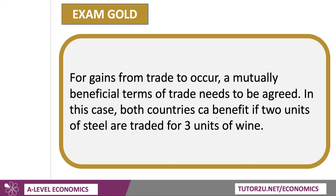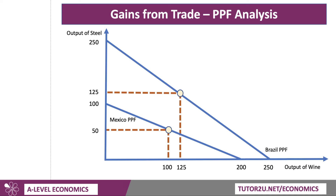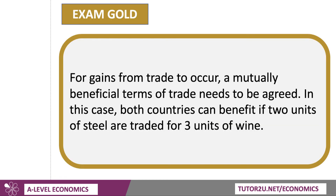For gains from trade to occur, mutually beneficial terms of trade need to be agreed. Both countries need to specialize first, and then trade. In this case, both countries can benefit if two units of steel are traded for three units of wine. Mexico currently gives up two units of wine for one unit of steel, whereas two-for-three means it gives up three units of wine and gets two units of steel — better for Mexico. Brazil gives up one unit of steel for one of wine, but now gives up two units of steel for three units of wine — again, better off. That's what we mean by mutually beneficial terms of trade.